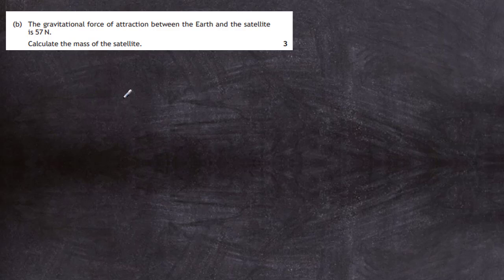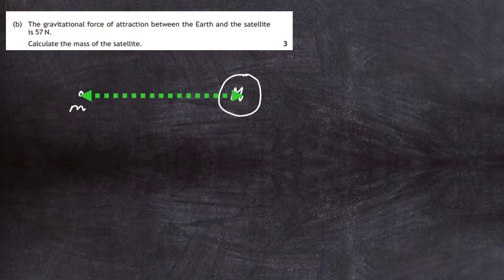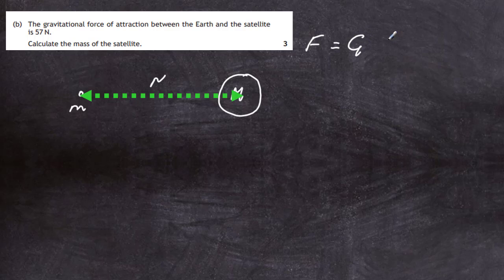If we have the Earth here and the satellite out here, capital M is the mass of the Earth and small m is the mass of the satellite. The distance between the centre of the Earth and the satellite is R, which we just worked out as 42.4×10⁶ m. The gravitational force of attraction is given by F = GmM divided by R².